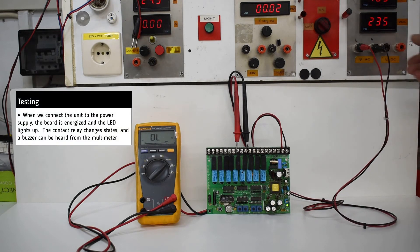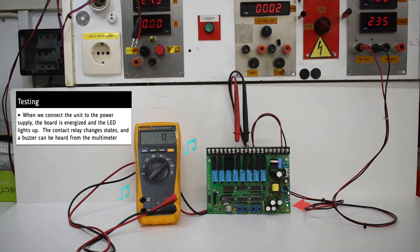When we connect the unit to the power supply, the board's indicator LED lights up and the state of the contact relay changes. Additionally, a buzzer can be heard from the multimeter due to the change of the relay contact.